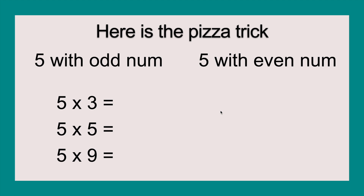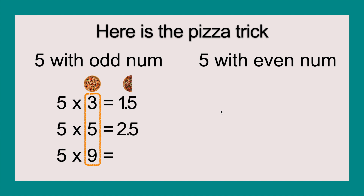I have listed three facts here under the odd number section. The facts are five times three, five times five, and five times nine. First I'm going to circle the column and put a full pizza above it, then take a half pizza next to the equation and write the half of the number we just circled right under the half pizza. After that all we have to do is take away the dots and we have our answers. Five times three equals fifteen, five times five equals twenty-five, five times nine equals forty-five.